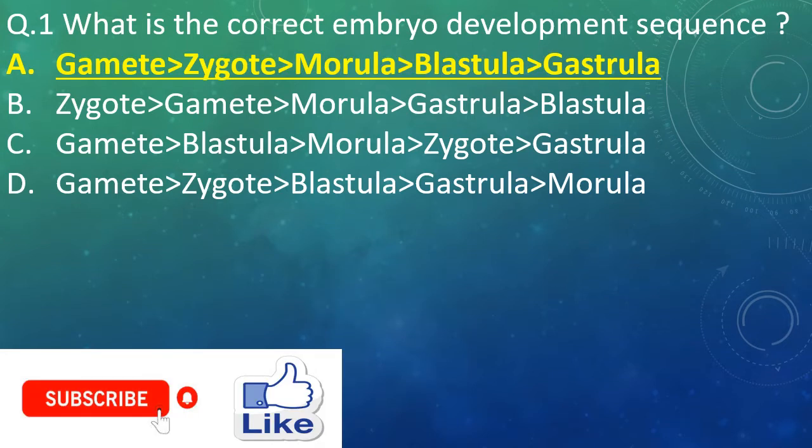Option A — gamete, then zygote, then morula, then blastula, then gastrula.